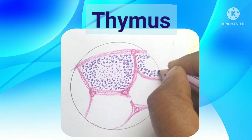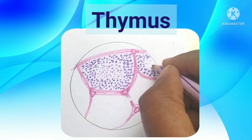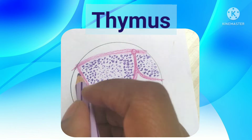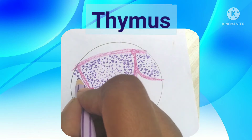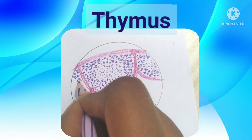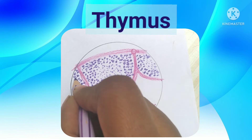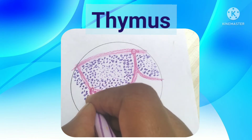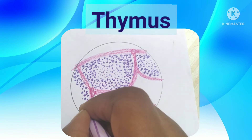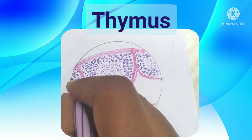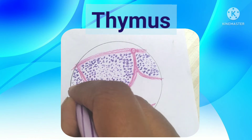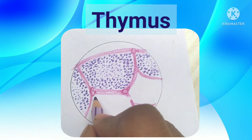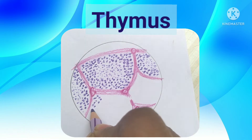Type 3 is present at the junction of cortex and medulla and forms a barrier between the cortex and medulla. Type 4 is also present at the junction of cortex and medulla. Type 5 supports the lymphocytes in the medulla. Type 6 are nothing but the Hassall's corpuscles, which we are going to discuss later.